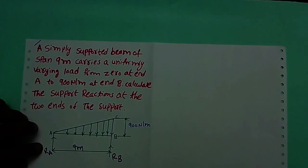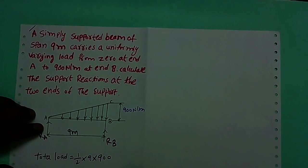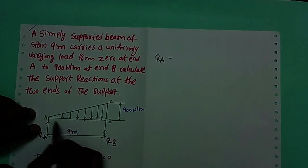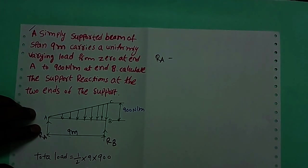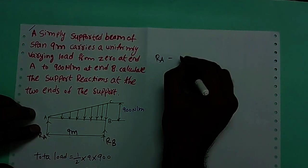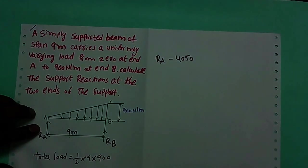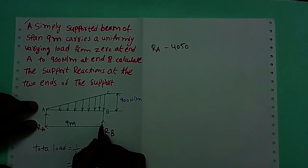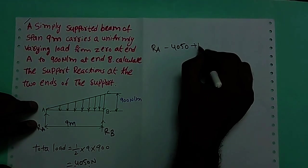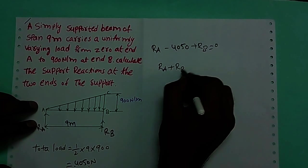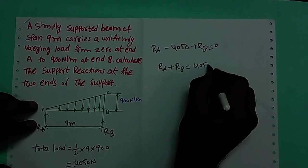Sigma Fy = 0. The first force is RA, acting upward — upward means positive — so plus RA. The UVL total load is 4050, acting downward, so minus 4050. Next force is RB, acting upward, so plus RB. This equals 0. Therefore, RA plus RB equals 4050 newtons.